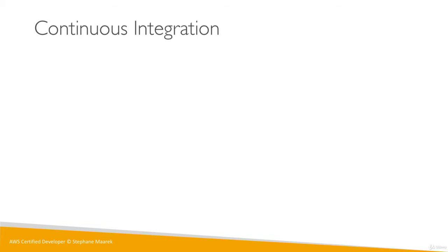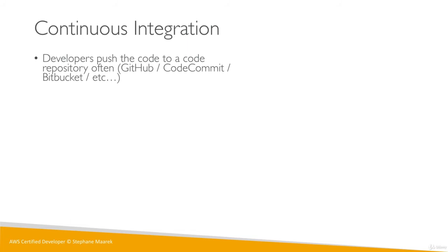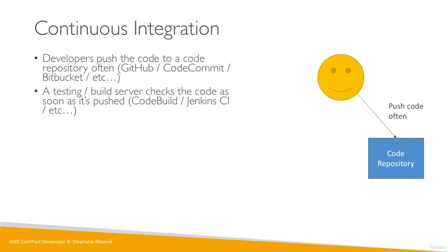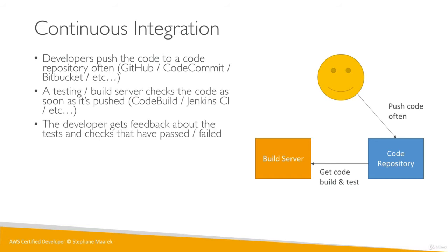So what is continuous integration? Continuous integration is basically allowing developers to push code to a code repository as often as possible. That code repository can be GitHub, CodeCommit, Bitbucket, etc. As a developer, I push my code often to my code repository. We also have a test and build server that checks the code as soon as it's pushed. For this we can use CodeBuild, or the most popular open source option, Jenkins. The build server gets the code from the repository and every time we do a push, it builds and tests it.